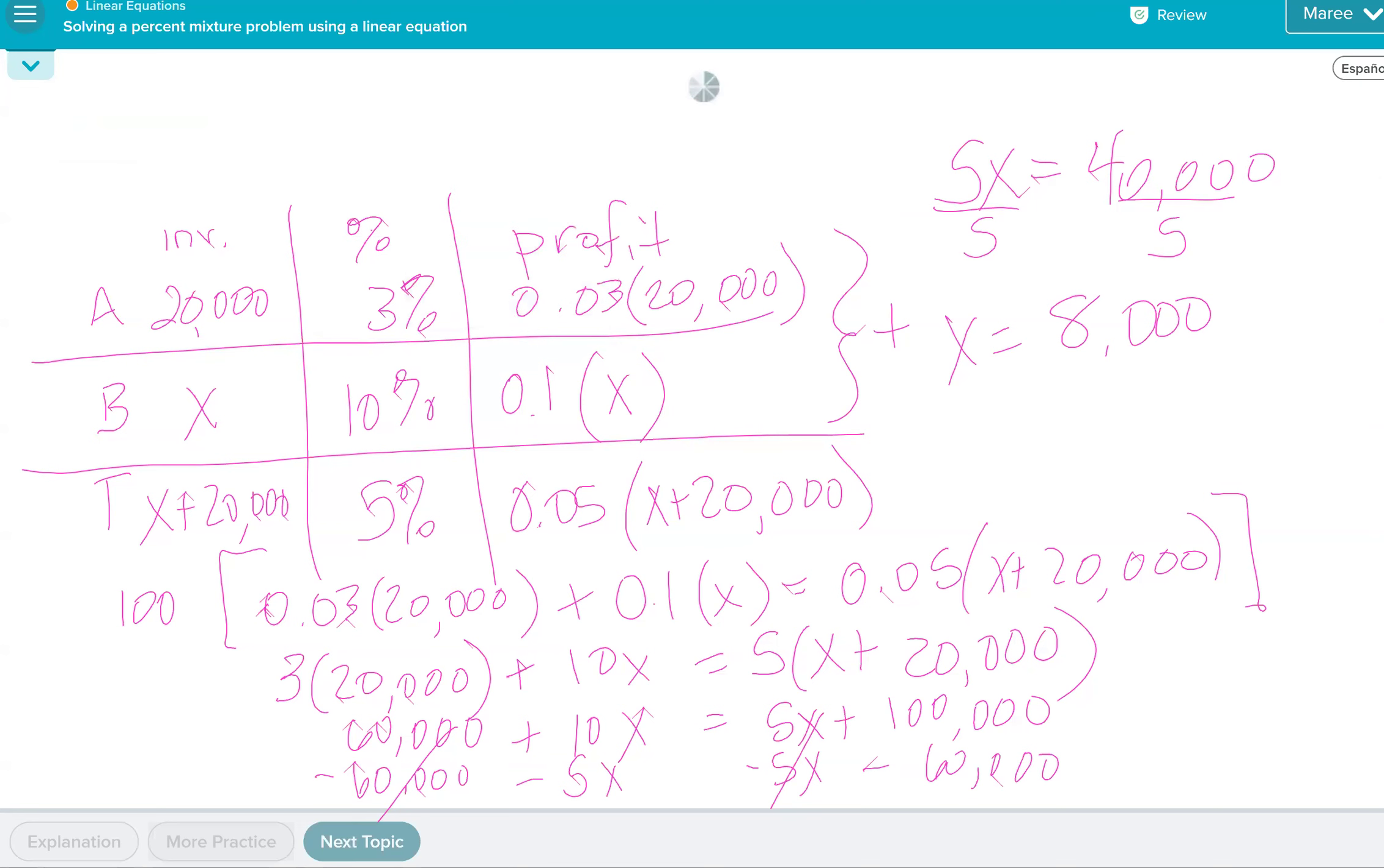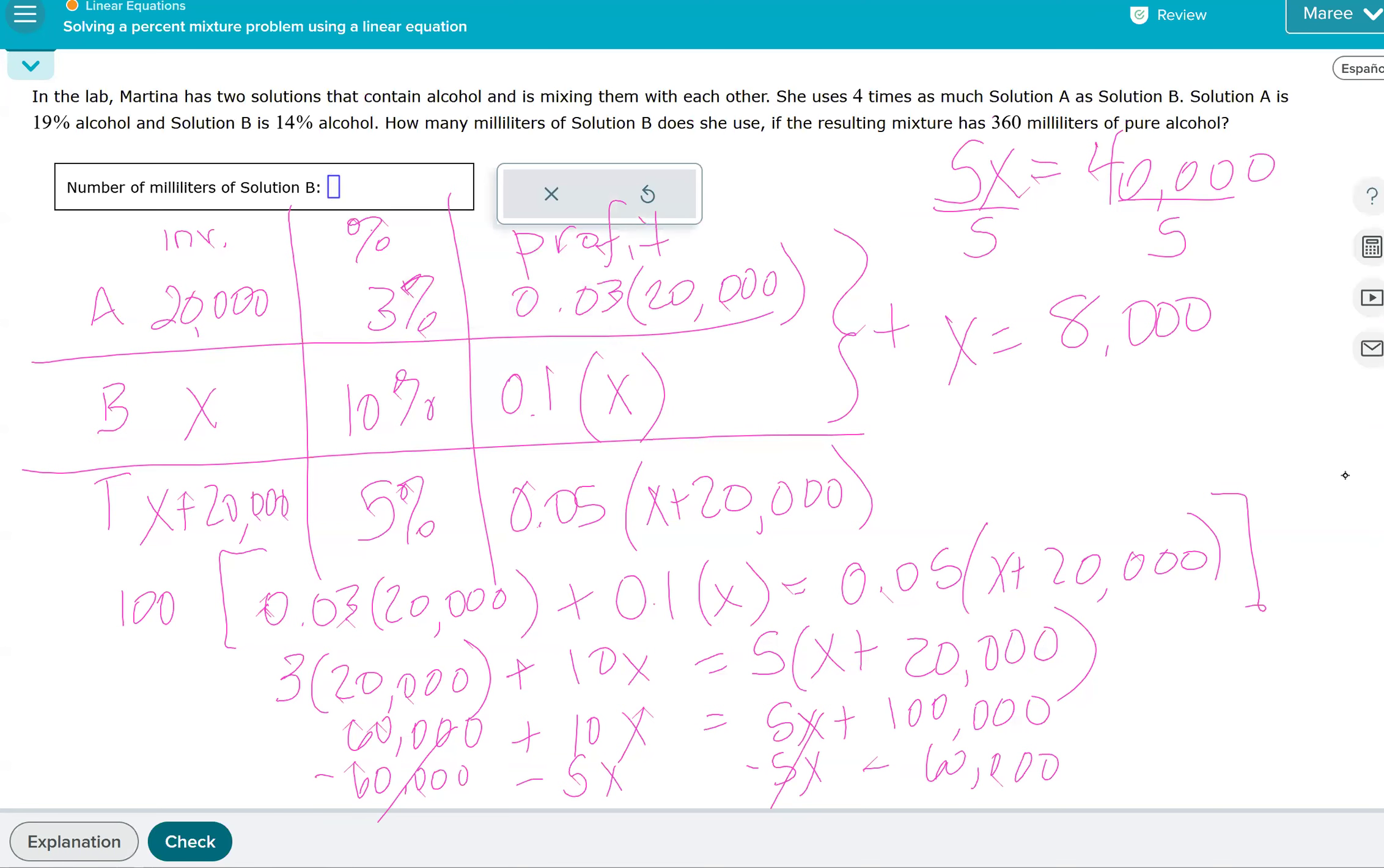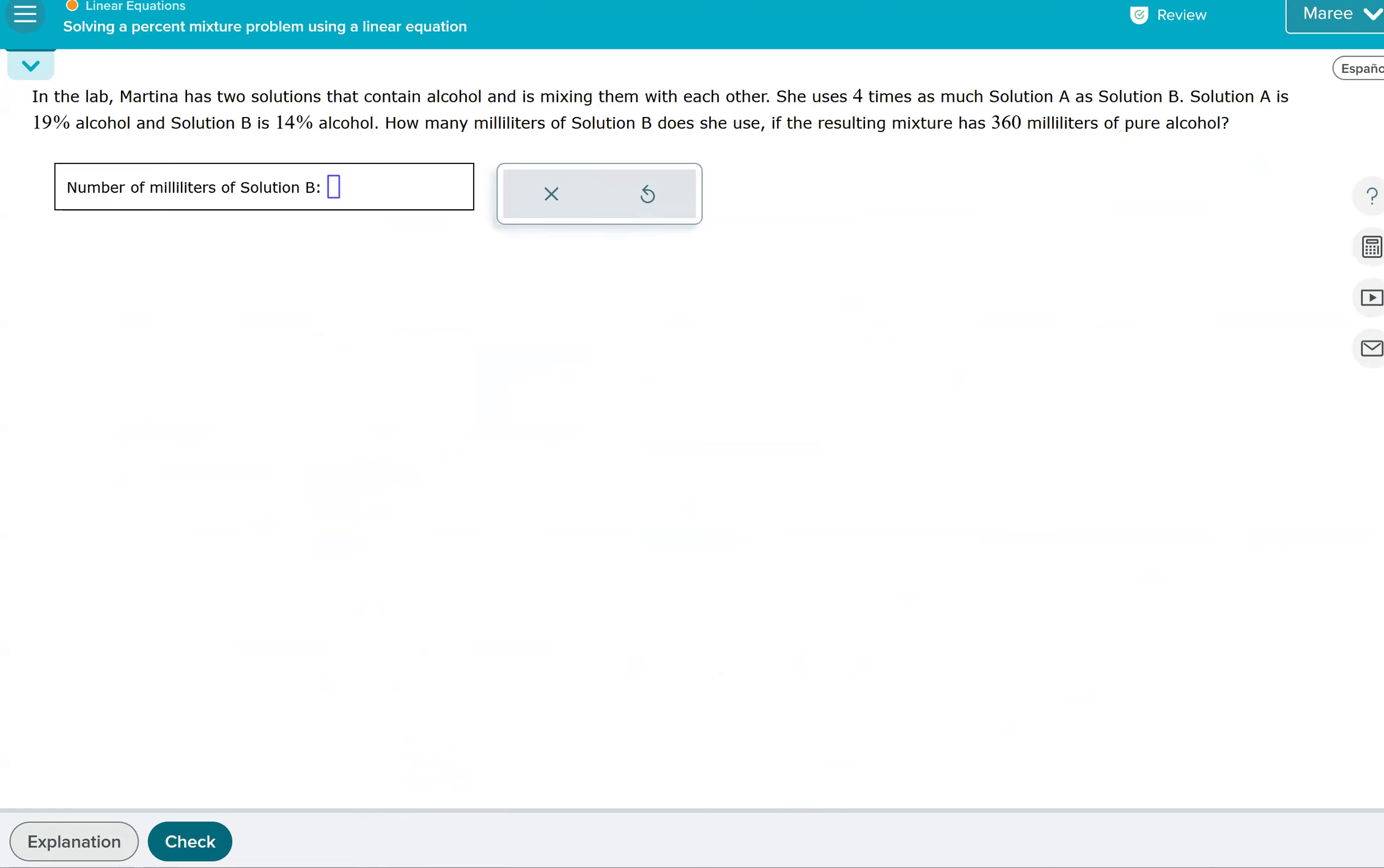Okay, we should do one more just for a little added help. So in the lab, Martina has two solutions that contain alcohol and is mixing them with each other. She uses four times as much solution A as solution B. Solution A is 19% alcohol and solution B is 14% alcohol. How many milliliters of solution B does she use if the resulting mixture has 360 milliliters of pure alcohol?